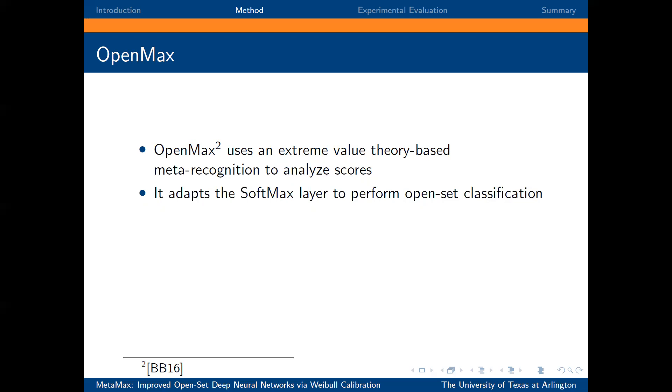Specifically, when an input image is fed into the network, features from the penultimate layer are extracted. Each score vector in this layer is called an activation vector. Activation vectors from each class are averaged to get the mean activation vector for each class.